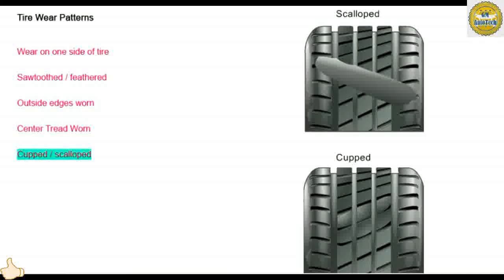A cupped or scalloped wear pattern on the tire tread is very distinct. It usually indicates a worn suspension component, such as a shock or strut assembly. This type of tire wear may produce a vibration felt as a shimmy in the steering wheel.